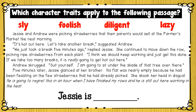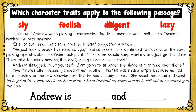'Suit yourself. I'm going to sit under the shade of that tree over there.' Five minutes later, Jesse glanced at her brother. His flat was nearly empty because he had been feasting on the few strawberries he had already picked. She shook her head in disgust: 'He is going to regret this in an hour when I have finished my rows and he is still out here working in the heat.' We can infer that Jesse is diligent — she's a hard worker — and that Andrew is lazy and foolish.